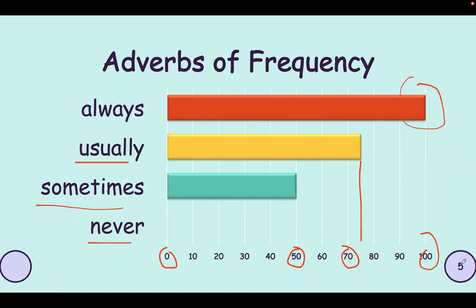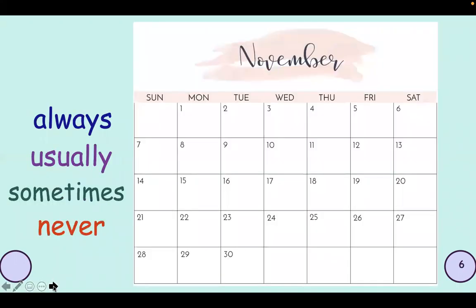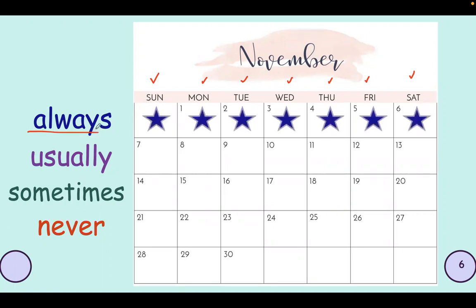What are those percentages? For example, we have the days: Sunday, Monday, Tuesday, Wednesday, Thursday, Friday, and Saturday. If we say always — I always exercise — it means that I exercise from Sunday to Saturday, every day. That means always: I always exercise, meaning every day.